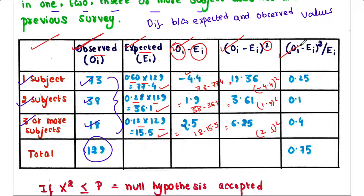In this column, we will divide this value by the expected value. 19.36 by 77.4 equals 0.25. 3.61 by 36.1 equals 0.1. 6.25 divided by 15.5 equals 0.4. Now we will add these values. If we add 0.25 plus 0.1 plus 0.4, we will get 0.75. That is the chi-square value.